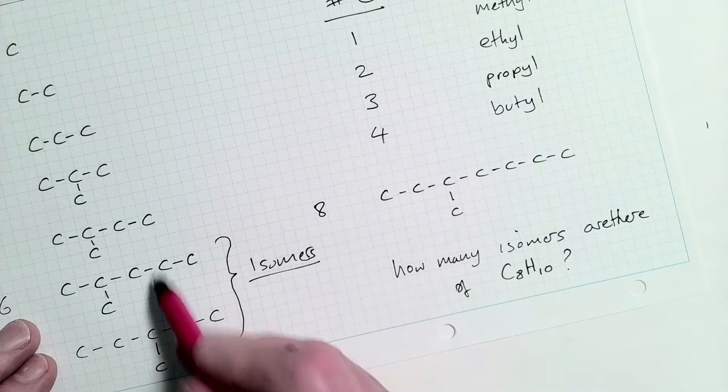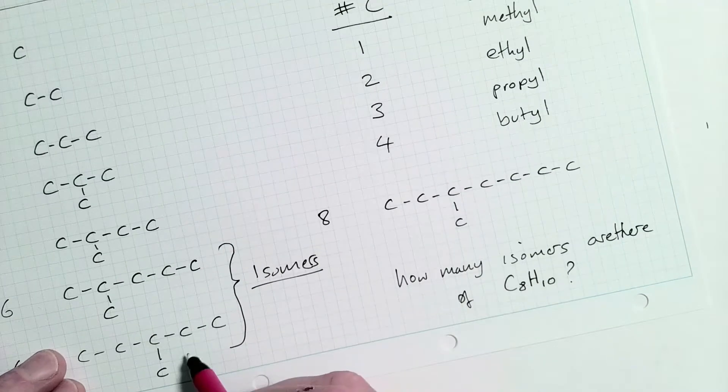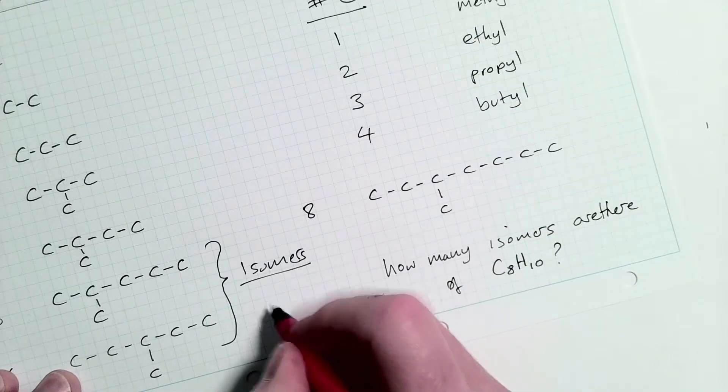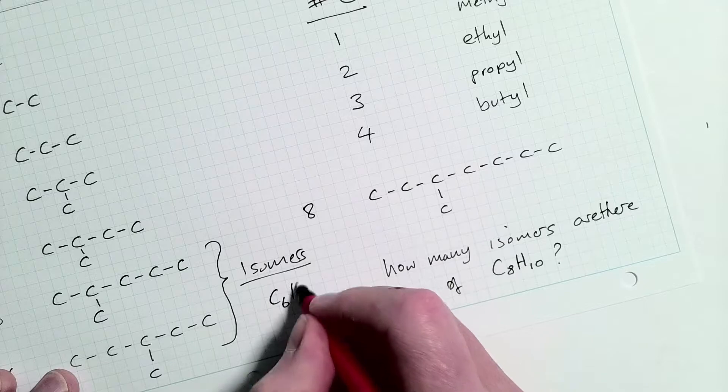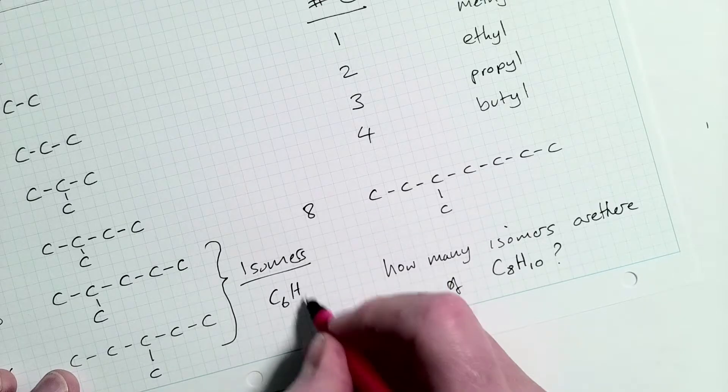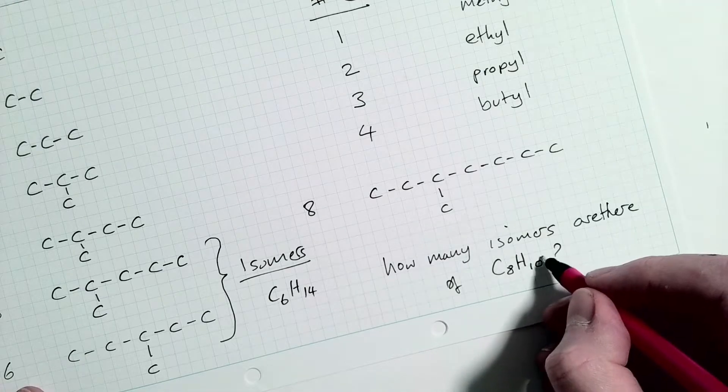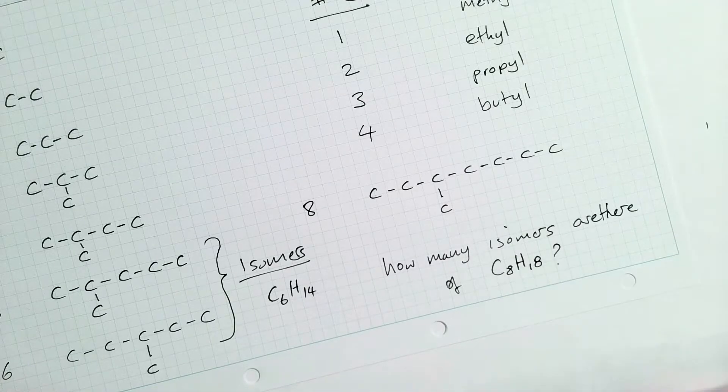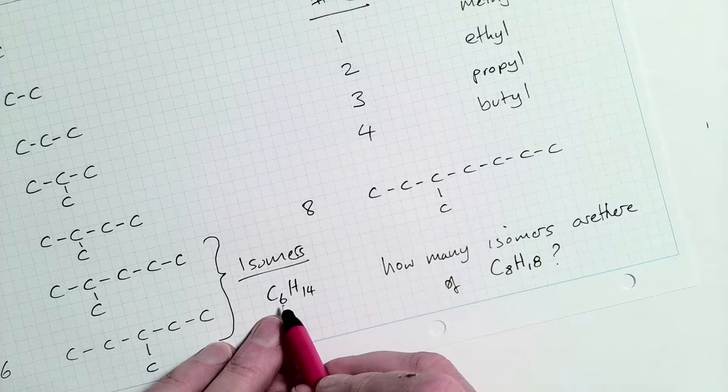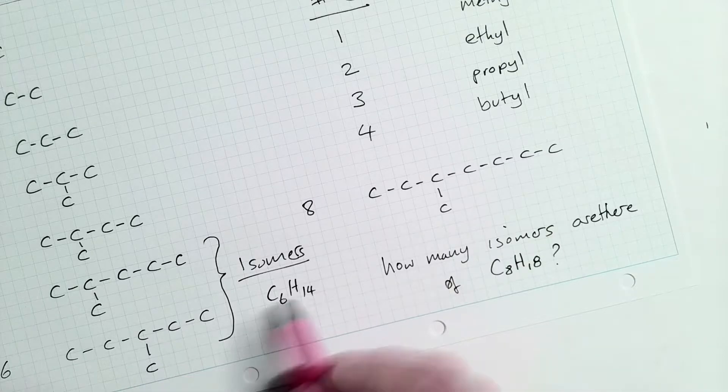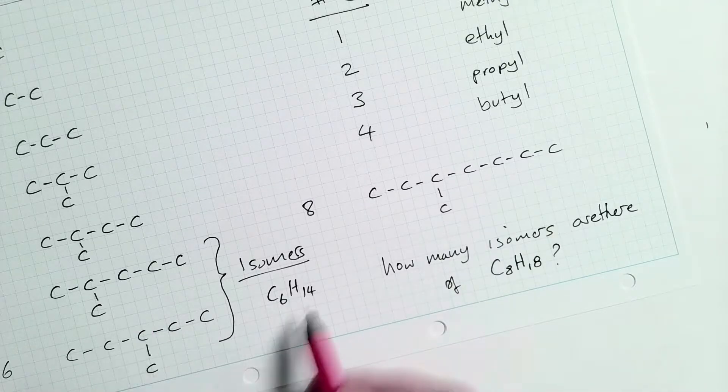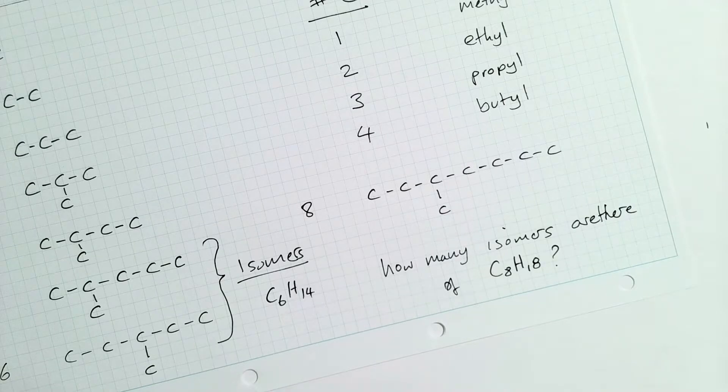These are called isomers. The reason is they have the same molecular formula. These are carbon. These are six. So it's going to be C6H6 times two is 12 plus two is 14. C8H18. That'll be 18. So I can make two different structures of this molecule at least.